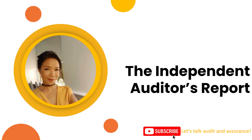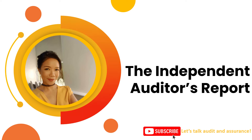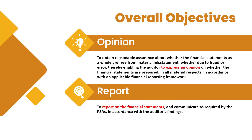When we start talking about the report of the Independent Auditor, we have to go back to the very beginning and discuss what are the overall objectives of an auditor in the performance of an FS audit. Our objectives are simply two-fold: number one, to express an opinion, and number two, to report on the financial statements as required by our PSAs. When we talk about the objectives of an audit, we think about the opinion and we think about the audit report.